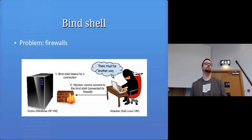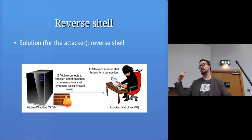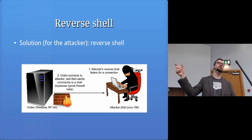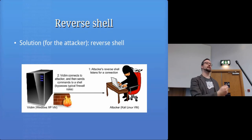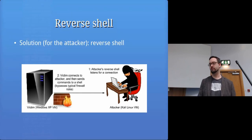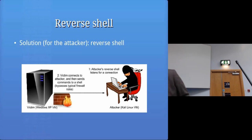The solution is a reverse shell. Instead of the attacker connecting in, the victim machine connects outward to the attacker. The attacker starts by listening on a port, ensures their firewall lets the connection through, then the payload connects back out to the attacker's open port and delivers the shell through that connection. This gets past most firewalls because most firewall rules are lazy — they allow anything to go out and only control what comes in.